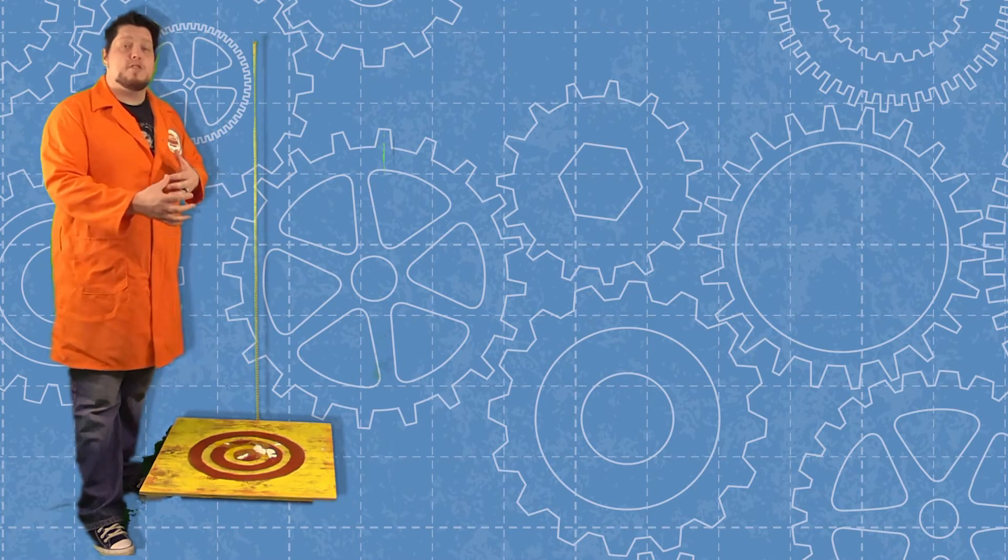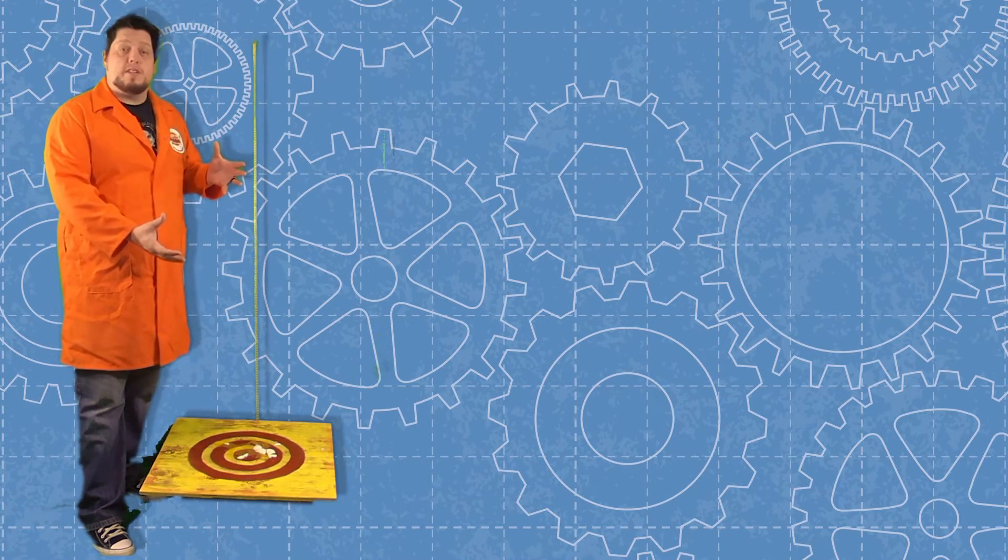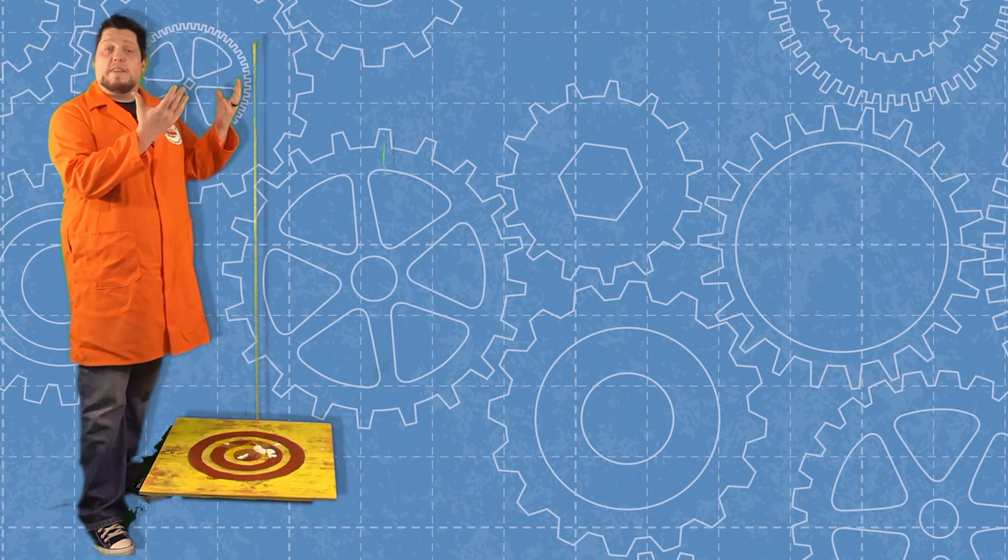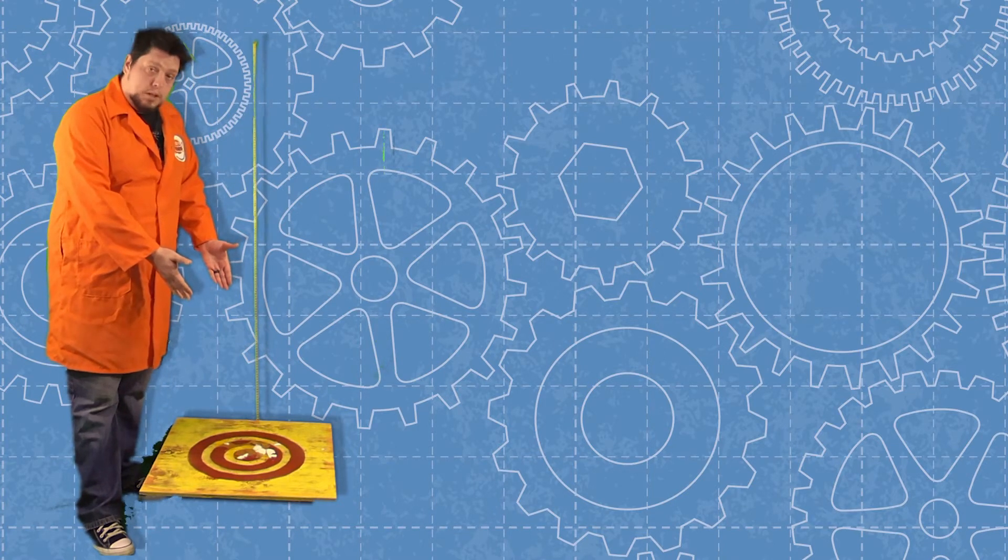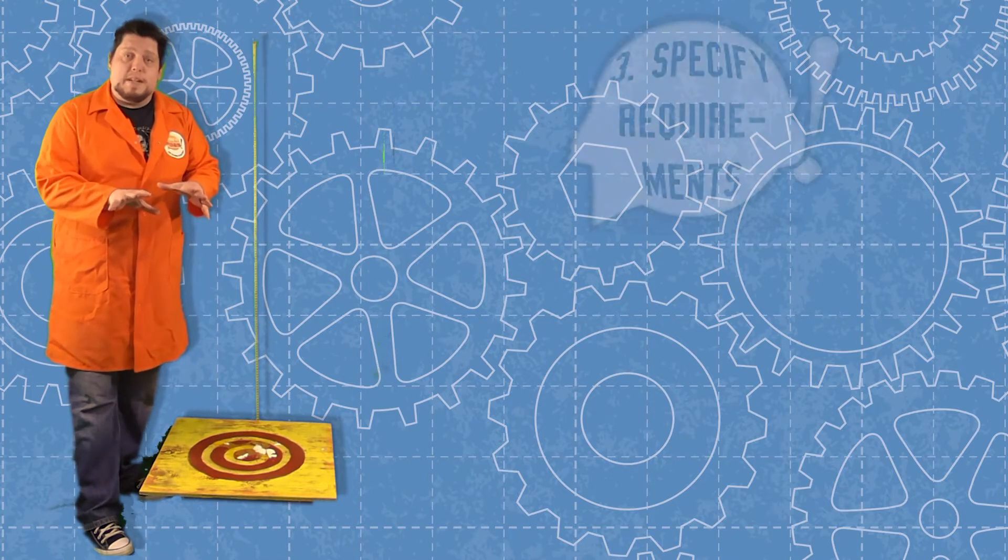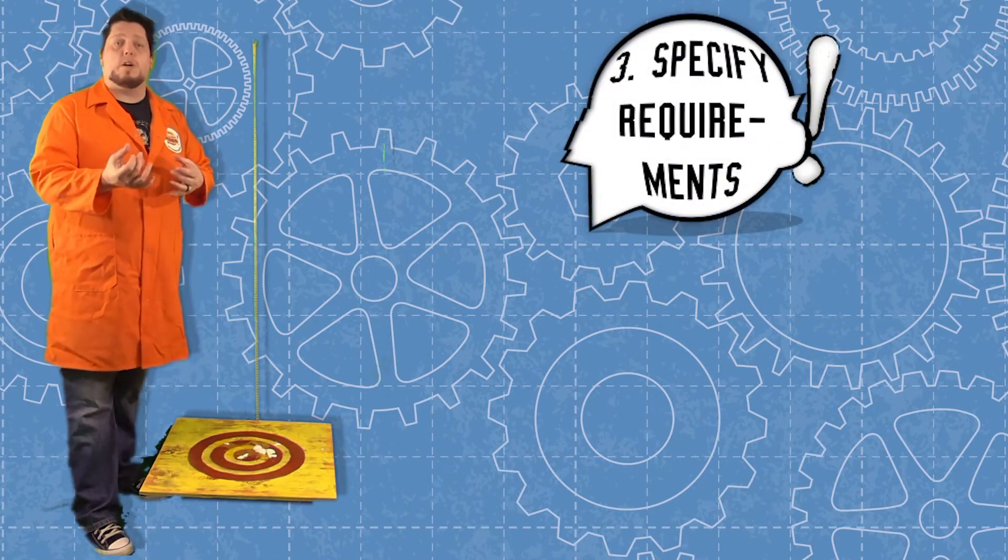So you can inform your brainstorming and then develop a prototype that safely delivers the egg from a height of 5 meters down to the landing pad below. Now, your prototype needs to follow a few specific requirements.